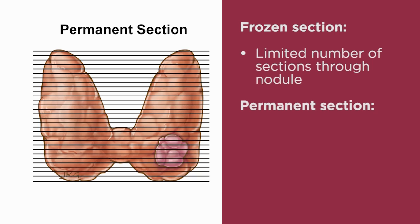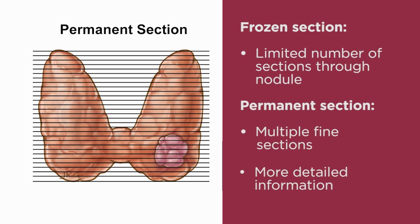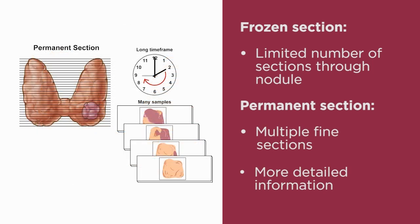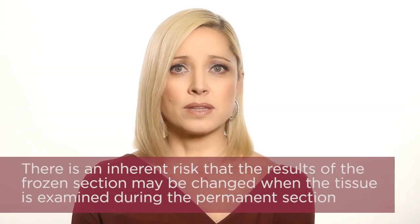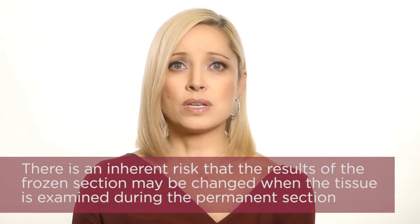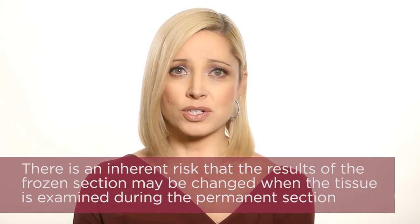During a permanent section, the entire gland is cut into fine sections, which provides much more detailed information about the nodule and the remainder of the gland. In addition, special stains may be performed on permanent section. Due to the more detailed nature of permanent section analysis, there is an inherent risk that the results of the frozen section may be changed when the tissue is examined during permanent section. In most instances, pathologists are very reluctant to make a determination that a nodule is malignant on frozen section unless there is irrefutable evidence.